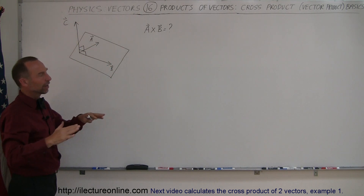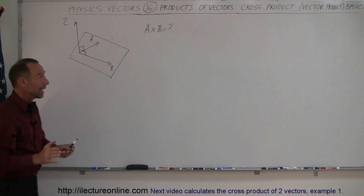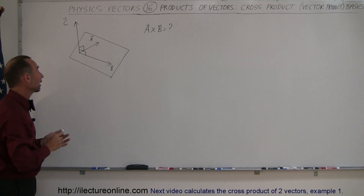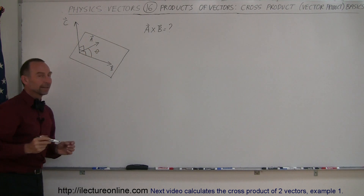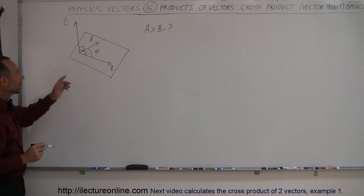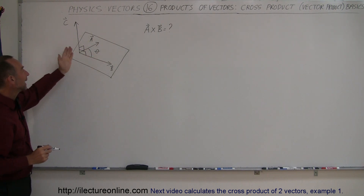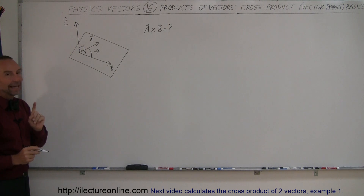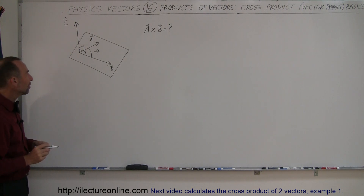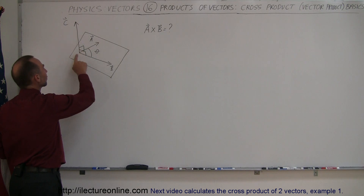Let's say we have a plane — a plane can be in any direction. We have two vectors on that plane, vector A and vector B, and they make an angle between them — let's call the angle theta. The result of multiplying A times B via the cross product gives a third vector, let's call it vector C.